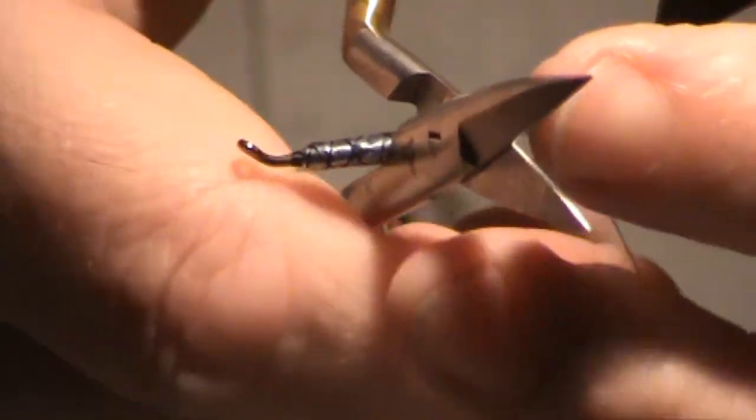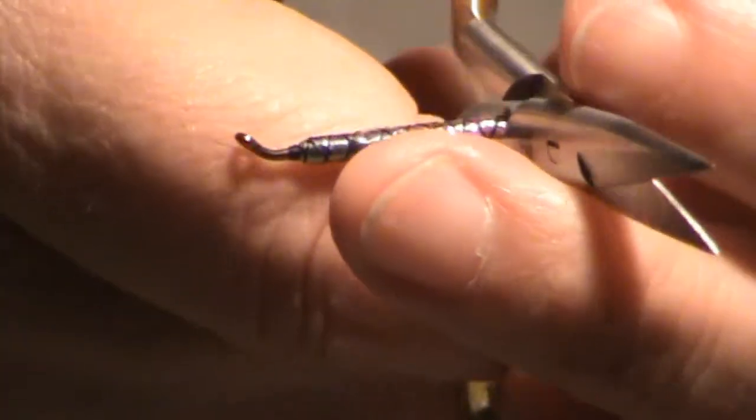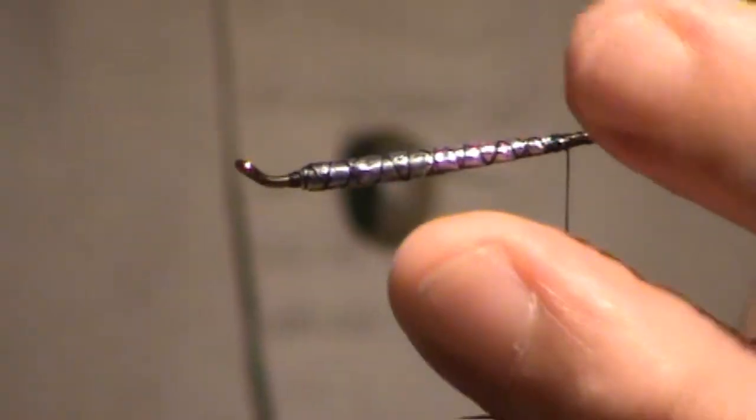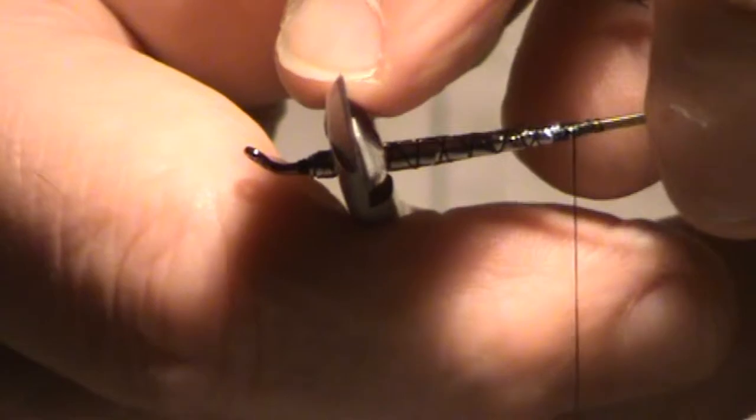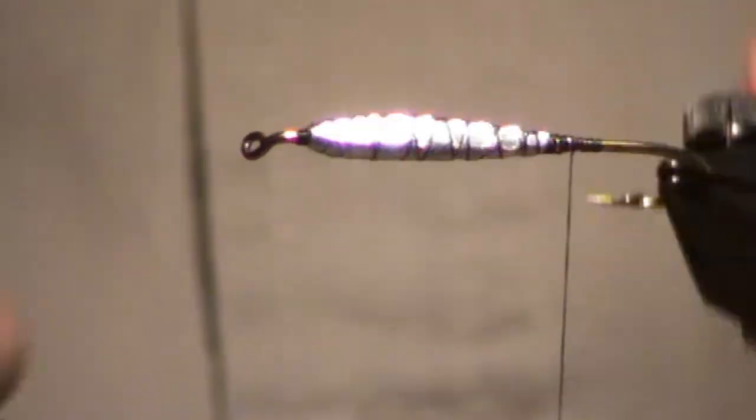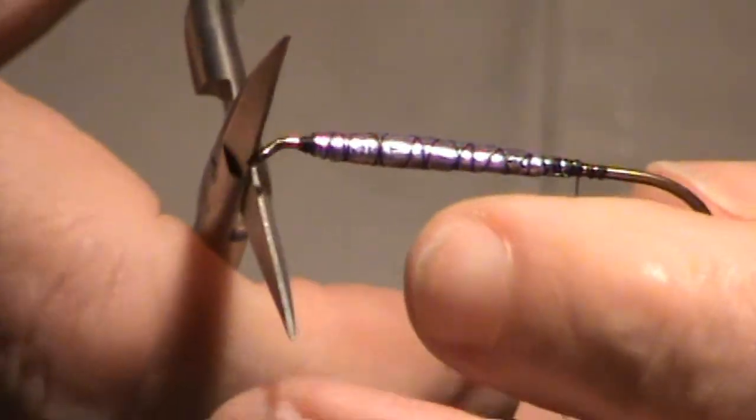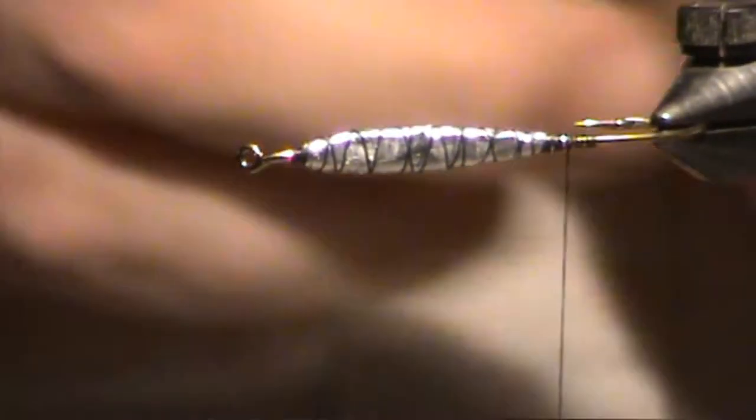So where did you salvage the foil from? Is that from a wine bottle? Nope. If that was from wine bottles man, my liver is done. But yes, you could, you can use the foil from a good bottle of wine. It works very well. It's even a little thicker than this and therefore you don't have to use as much.